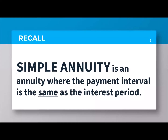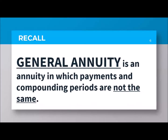The first type of annuity is the simple annuity. The keyword here is 'same' — the payment interval and the interest period are the same. Then the next type is the general annuity, wherein it is not the same — it is the opposite of simple annuity. The payment period and the interest period are different.